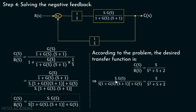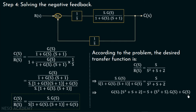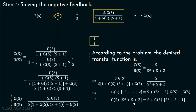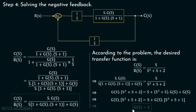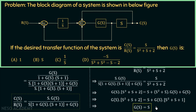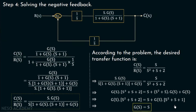We equate the calculated transfer function with the given one: s·G(s) over [s·(1 plus G(s)·(s+1)) plus G(s)] equals s over s squared plus s plus 2. The s on both sides cancels. Cross-multiplying, we get G(s)·(s squared plus s plus 2) equals s plus s squared·G(s) plus G(s). Taking G(s) common, we have G(s)·(s squared plus s plus 2) equals s plus G(s)·(s squared plus s plus 1). Transposing, we get G(s) equals s. This is the answer — option B is correct. We have solved this problem using method 1, block diagram reduction.